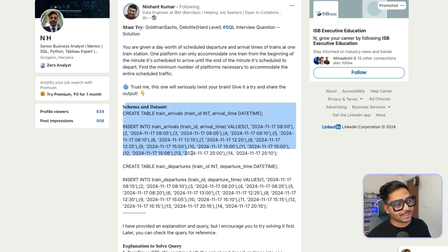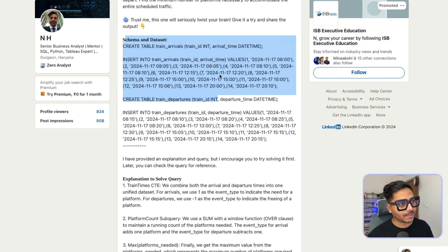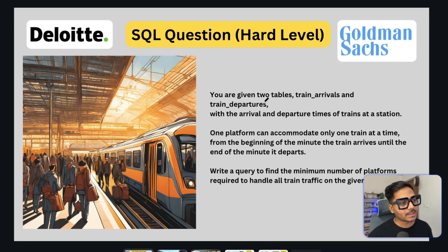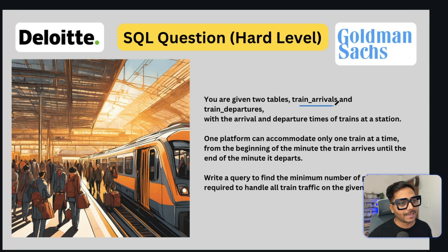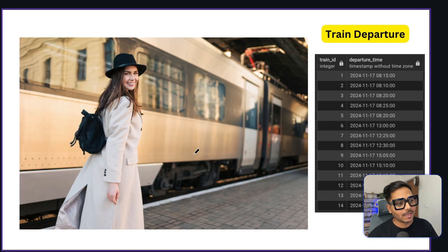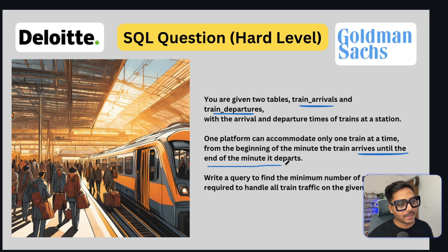So here is the problem statement and the dataset. A lot of users have already solved this problem. I have created a small PPT so that I can explain the question in a better way. It says you are given two tables for a train station — one is called train arrivals and one is called train departures. Train arrivals has information about trains arriving, and train departures has information about trains leaving the stations.